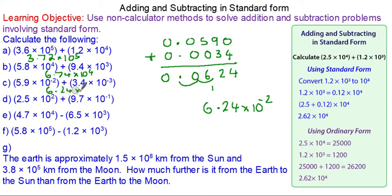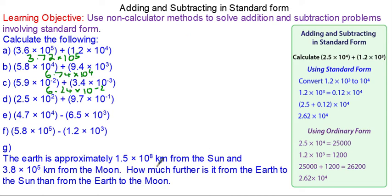For question d, we've got 250, which is 2.5 × 10², plus 0.97, which is 9.7 × 10⁻¹. We'll put zeros for placeholders.